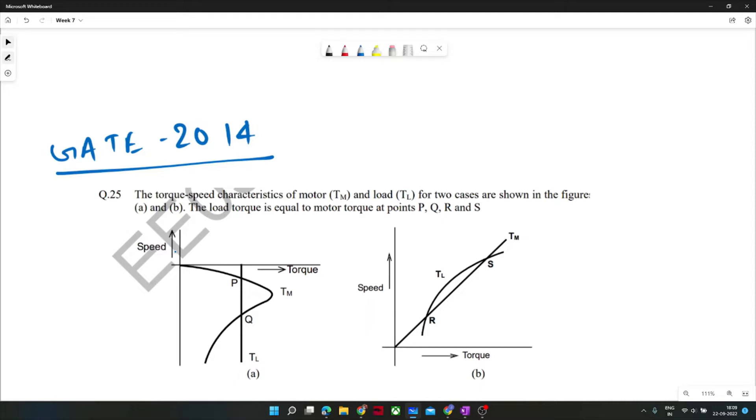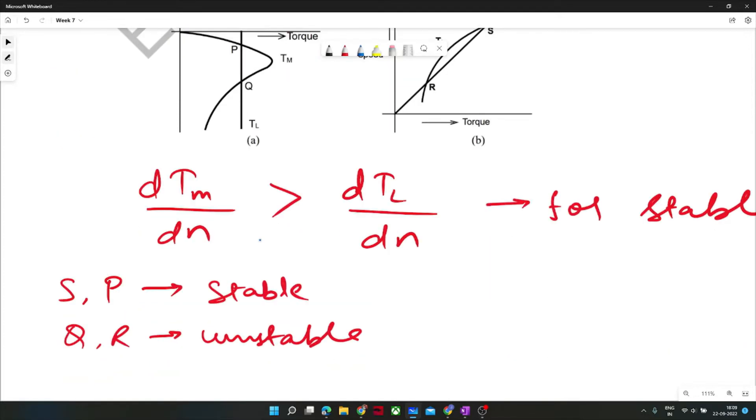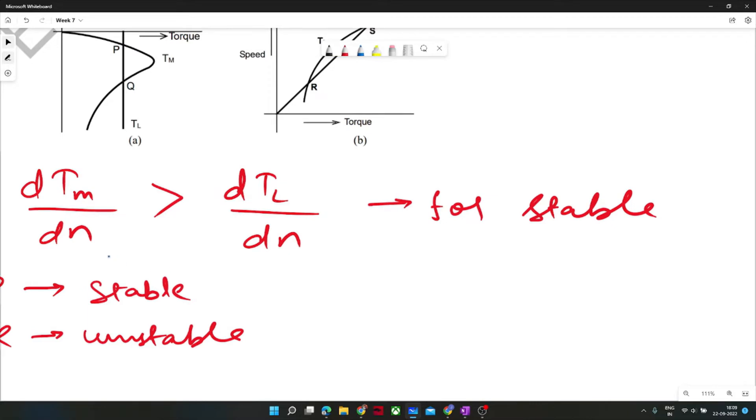From the first figure, when the motor is trying to catch the load and attain the load torque, it's in stable mode. The general formula for stability is: motor torque variation with speed (dTm/dn) should be greater than load torque variation with speed (dTl/dn), then it's stable.